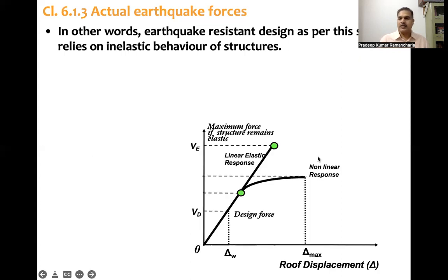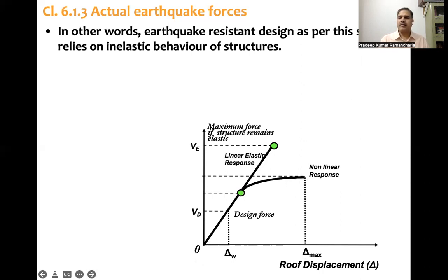Looking at the pushover graph, we can see V_yield, V_maximum, and delta_maximum. The structure reaches up to delta_maximum, and the point at which we stop — the limit of useful ductility — is usually defined at 85% of the peak strength.